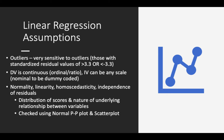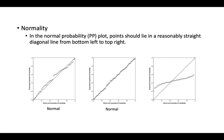All of these can be addressed using scatter plots or the normal PP plot. For normality, you can look at the normal PP plot. If your data is distributed on the straight line, then we assume that we have a normal distribution. If it is distributed like the third figure shown here, it is assumed to be not normally distributed.